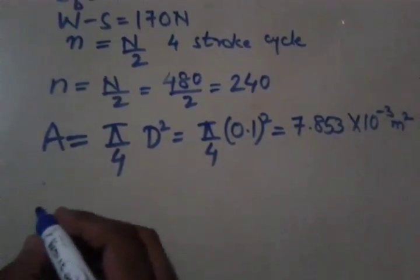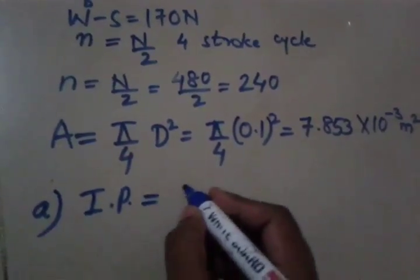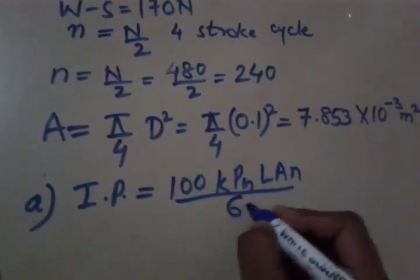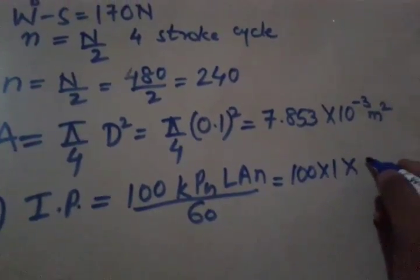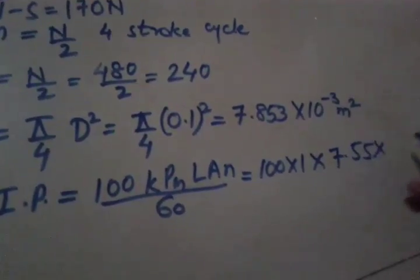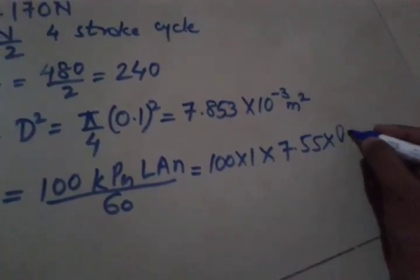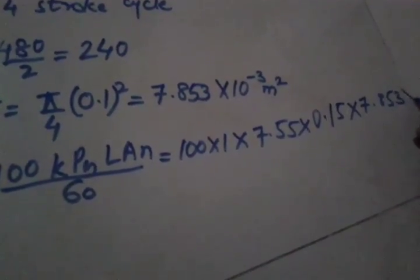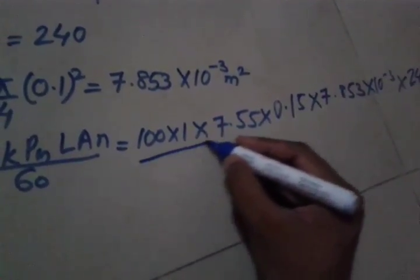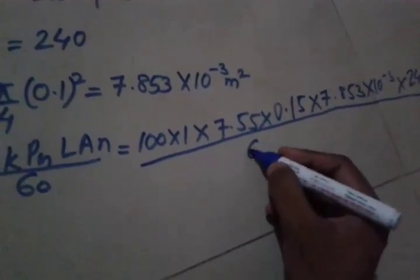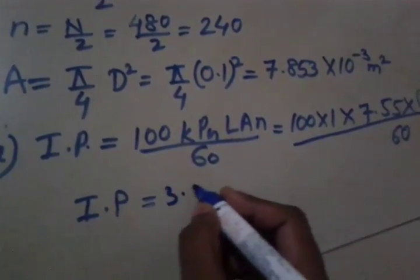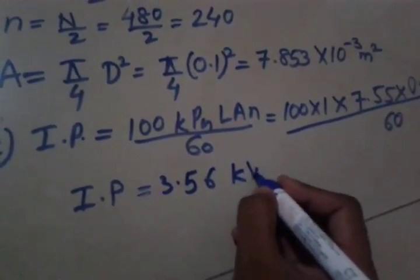Now we have to calculate indicated power as asked in the question. The formula is 100 K PM L A small n divided by 60. So this is 100 into 1 into PM that is 7.55 into L which we have calculated as 0.15 and then A which we have calculated as 7.853 into 10 raised to minus 3 and then small n that is 240 and now divided by 60. So indicated power, we got it as 3.56 KW.